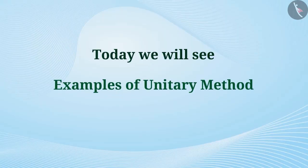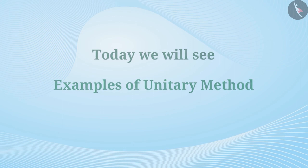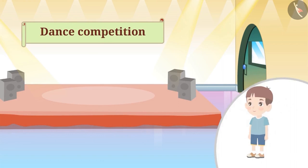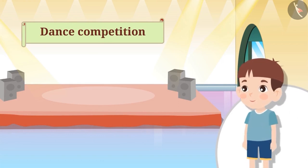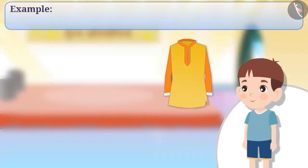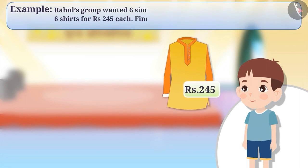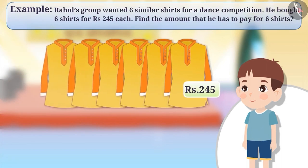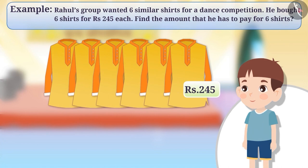Today, we will see some examples of unitary method. Example 1: Rahul's group wanted six similar shirts for a dance competition. He bought six shirts for 245 rupees each. Find the amount that he has to pay for six shirts.